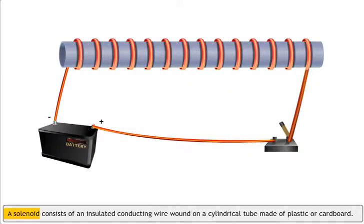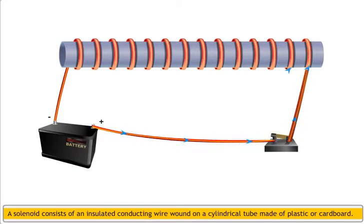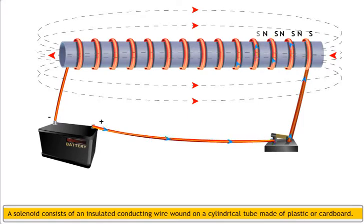A solenoid consists of an insulated conducting wire wound on a cylindrical tube made of plastic or cardboard. Thus, a solenoid consists of a number of circular loops — that is, it constitutes a coil. The length of a solenoid is greater than its diameter. When current passes through a solenoid, each loop in the solenoid behaves like a tiny bar magnet with the south pole of one loop facing the north pole of its adjacent loop and vice versa.